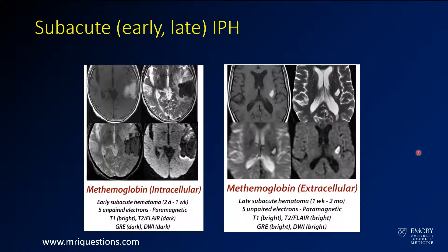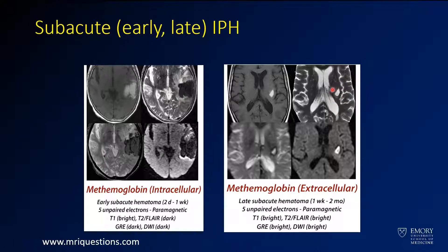As it transitions to subacute, you get development of methemoglobin. On the T1-weighted image in the upper left corner, it has become bright — you're now seeing that methemoglobin. The T2 appearance tends to vary based on how hydrated that hemoglobin is. Over time, the hemoglobin comes out of the red cells, is exposed to more water, and becomes brighter on T2. So here, as it's getting a little later, it's brighter on T2.